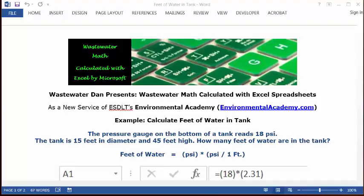Today's example, calculate feet of water in a tank. Today's problem reads, the pressure gauge on the bottom of the tank reads 18 PSI. The tank is 15 feet in diameter and 45 feet high. How many feet of water in the tank?